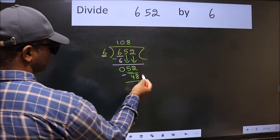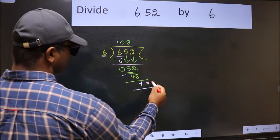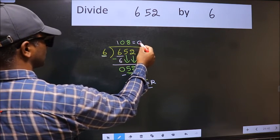No more numbers to bring it down. So we stop here. This is our remainder and this is our quotient.